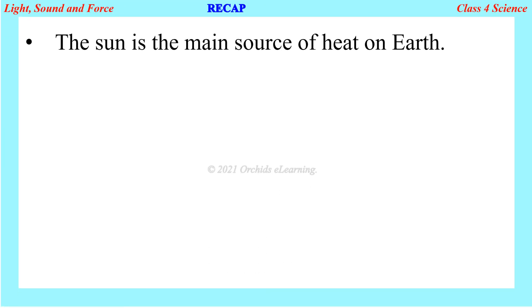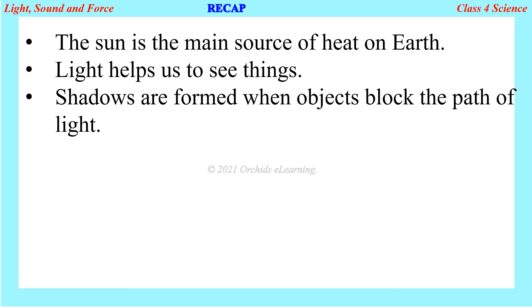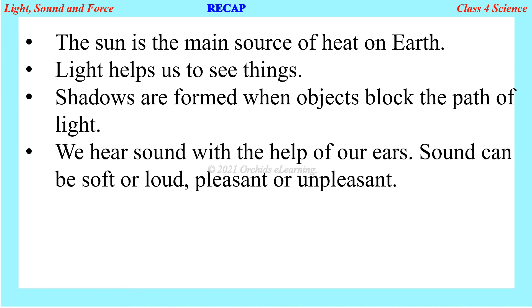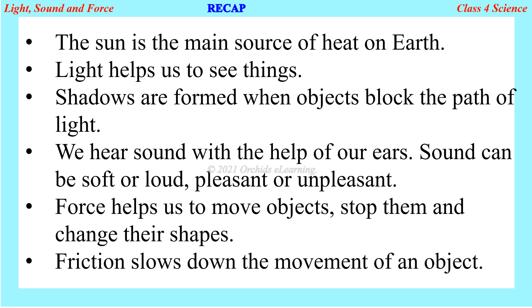Let us recap: The Sun is the main source of heat on earth. Light helps us to see things. Shadows are formed when objects block the path of light. We hear sound with the help of our ears. Sound can be soft or loud, pleasant or unpleasant. Force helps us to move objects, stop them, and change their shapes. Friction slows down the movement of an object.